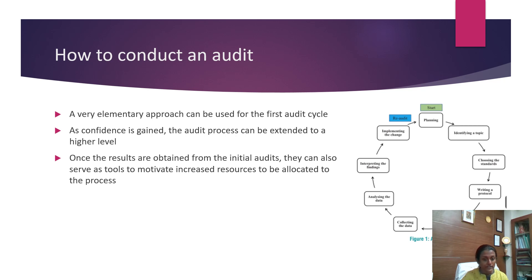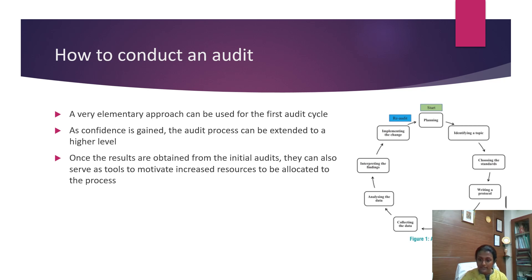How to conduct an audit: this is a very elementary approach and can be used for the first audit cycle. As confidence is gained, the audit process can be extended to a higher level. Once results are obtained from initial audits, they can serve as tools to modify and increase resources allocated to the process. It starts with planning — identify a topic, choose the standards, write a protocol, collect data, analyze the data, interpret the findings, and implement the changes.